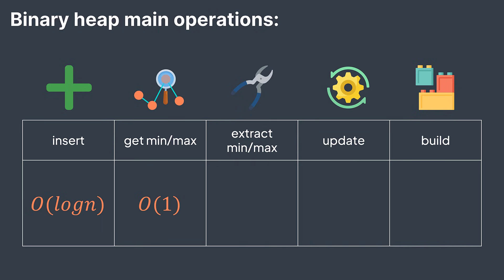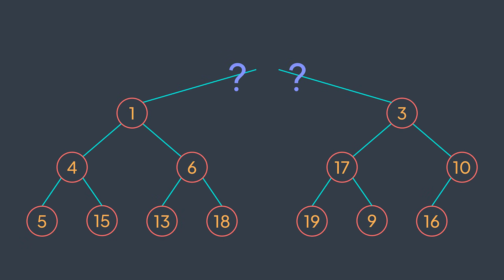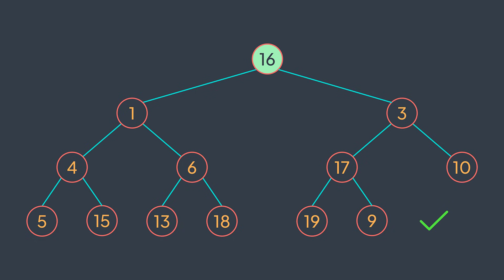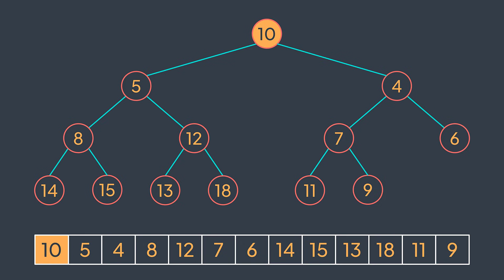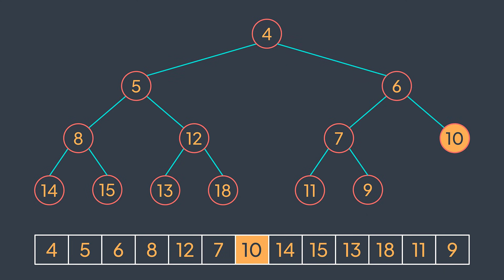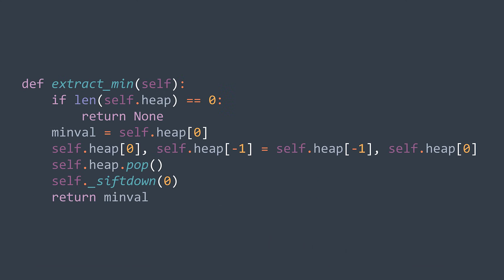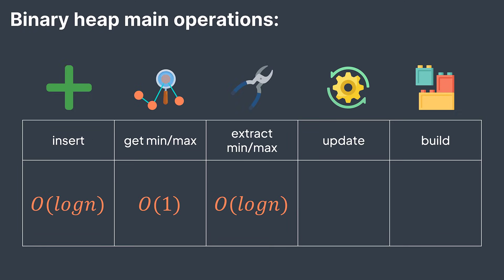Next operation is extract min — we want to get the minimum value but also remove it from the heap. In a tree, we can't just delete the root directly because its children will have no parent. What we do is first swap it with the last leaf node, then delete the node that was the root — it gets safely deleted because it's a leaf with no children. In a heap, we do the same: swap the root with the last element in the array and pop to remove it. But this may break the heap property, so we apply sift down on the new root to take it to the right place. The time complexity is O(log n) because we're calling sift down.